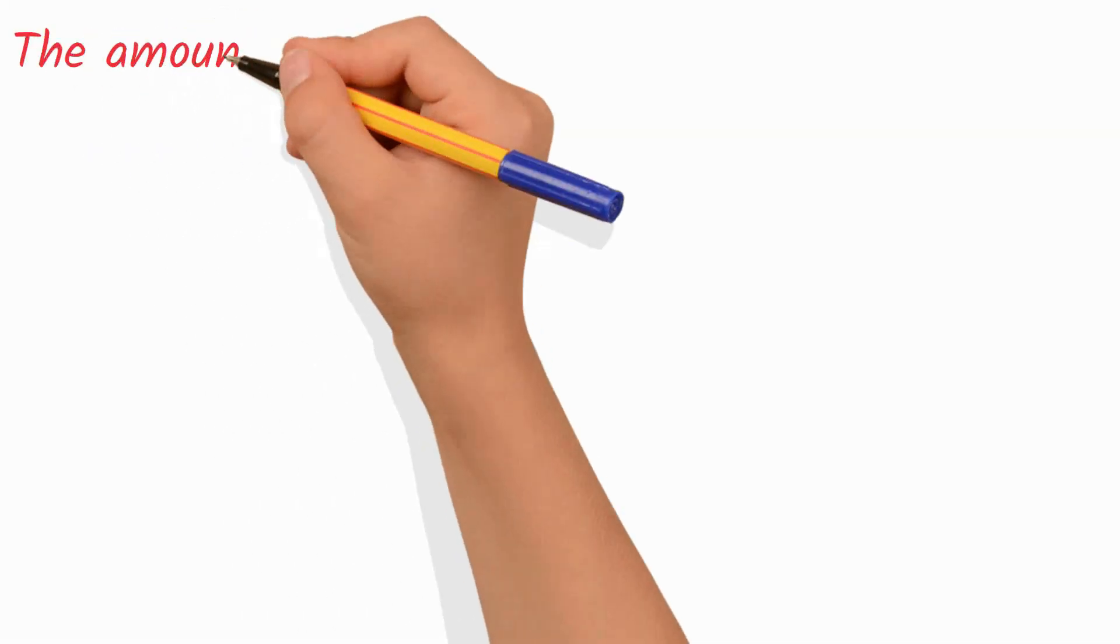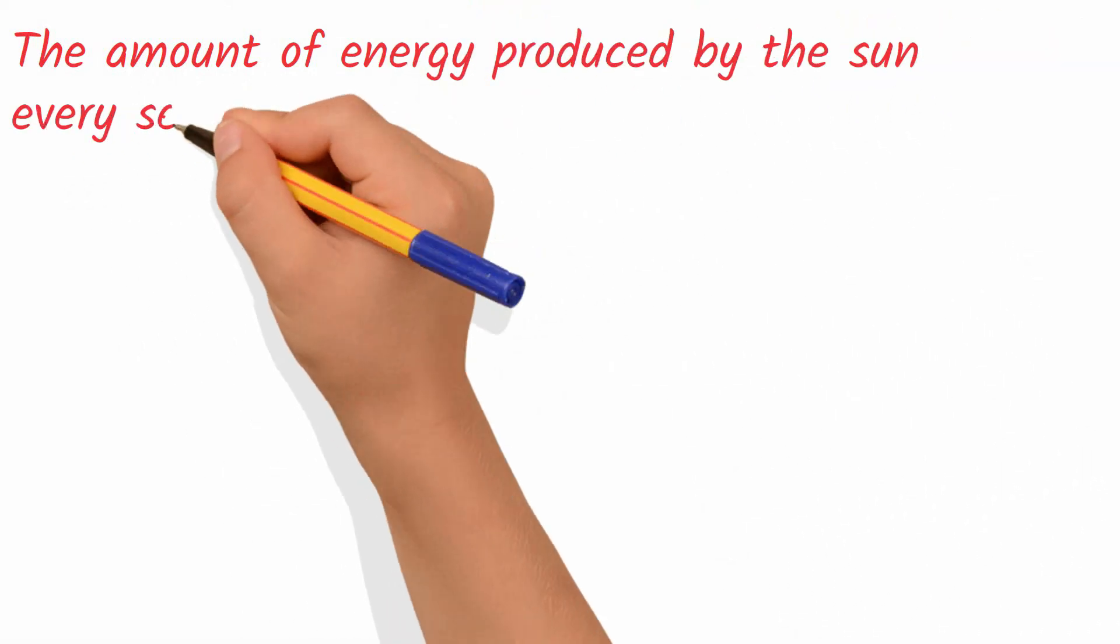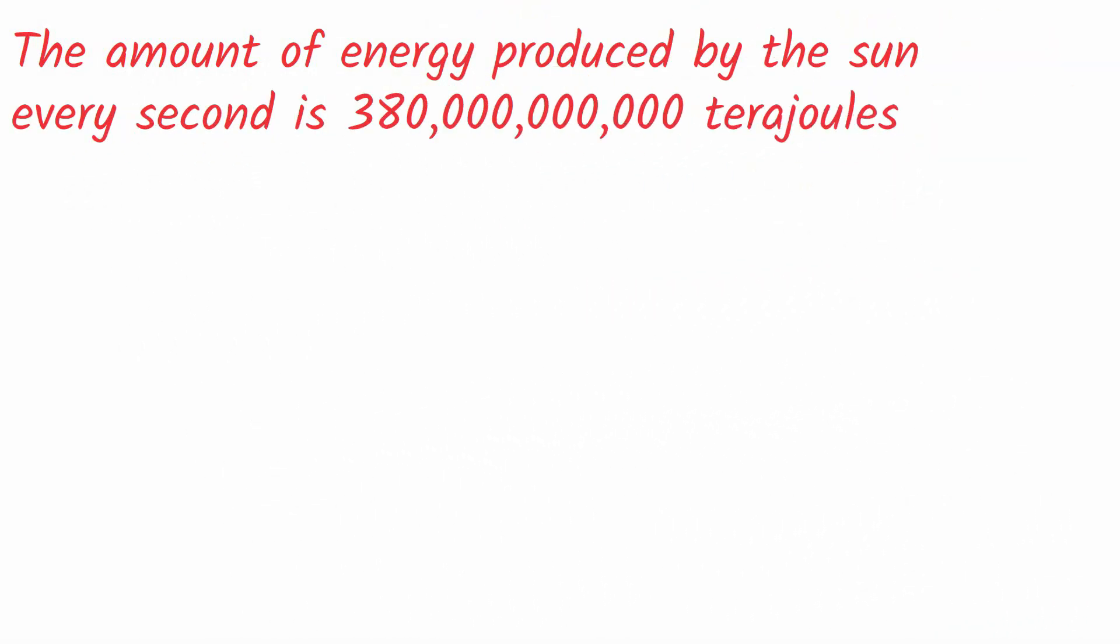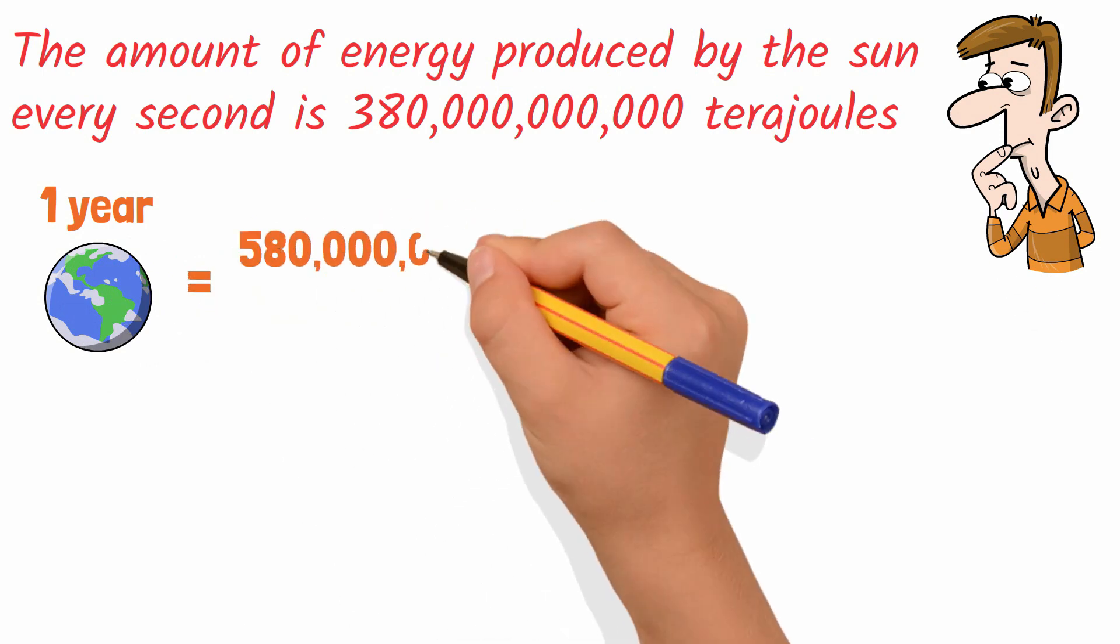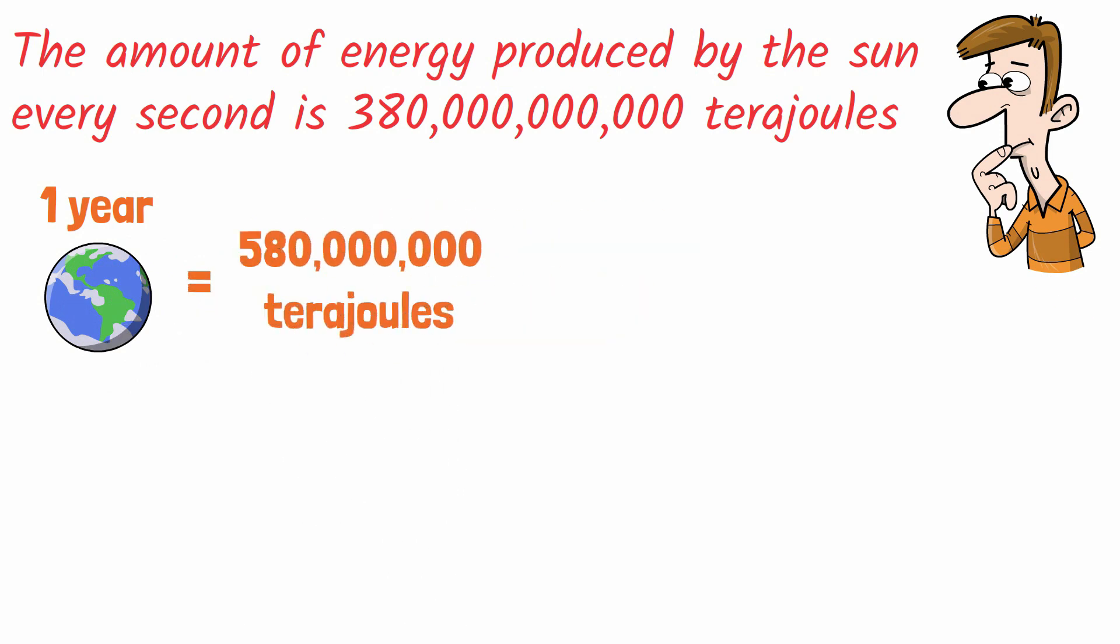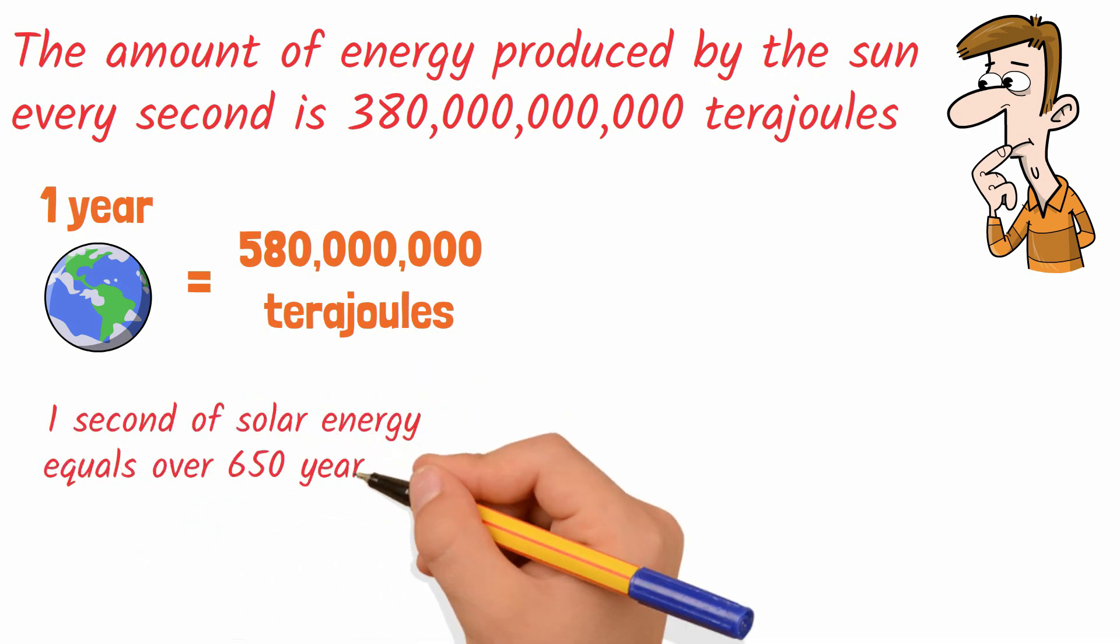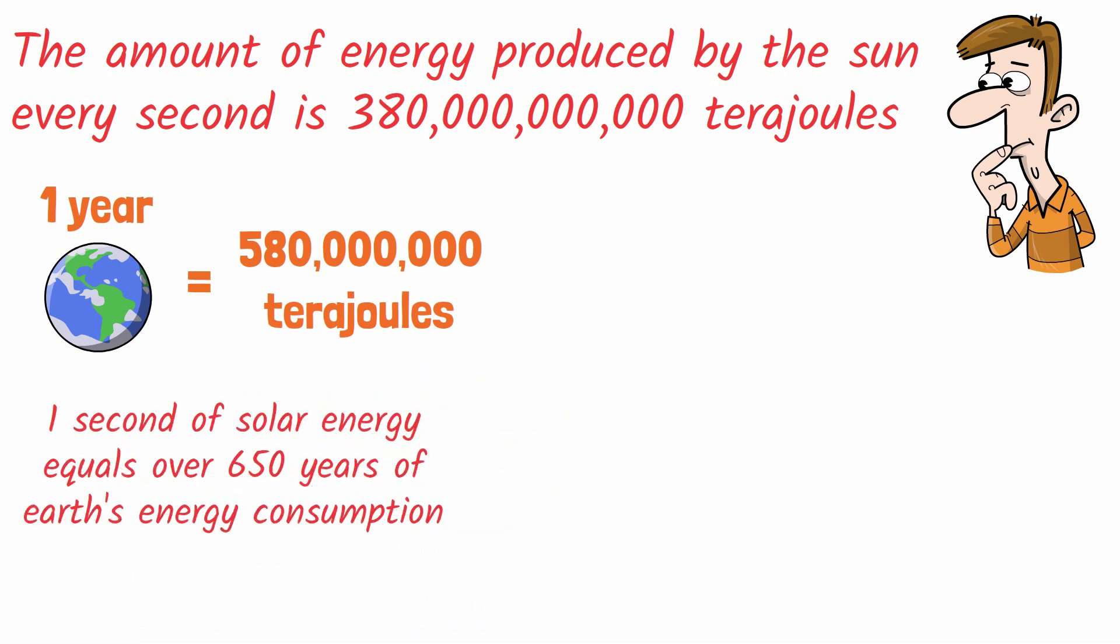The amount of energy produced by the Sun every second is 380 billion terajoules. Now let's try to make sense of that number. The amount of energy used each year by the entire planet is about 580 million terajoules, which means the Sun produces enough energy in one second to supply over 650 years of Earth's energy consumption. Wild.